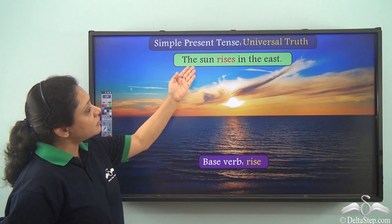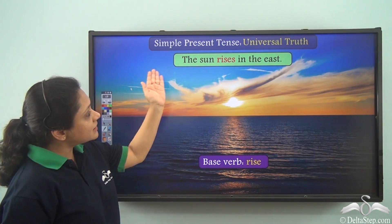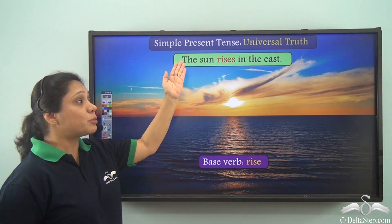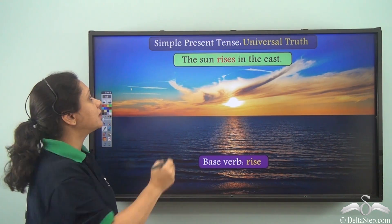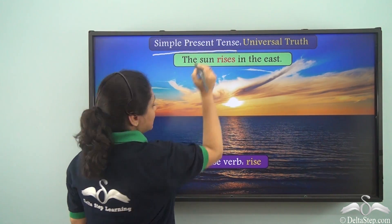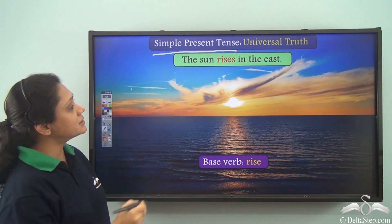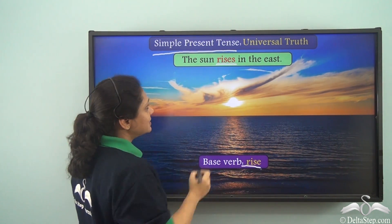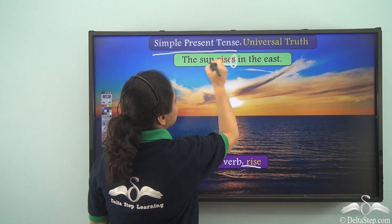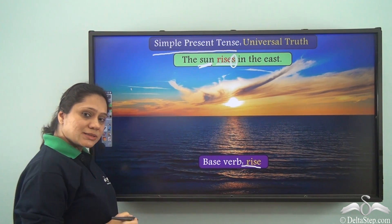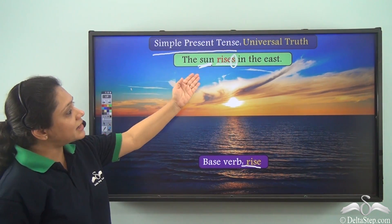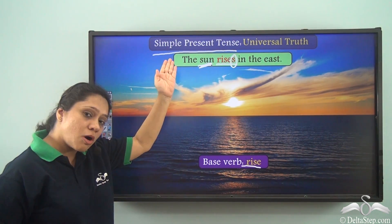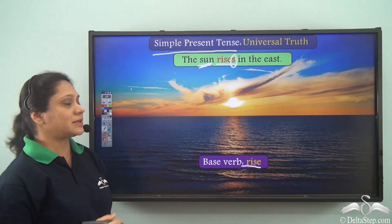The sun rises in the east. This is a universal truth. Sentences which give us universal truth are in the simple present tense. In this sentence, rises is from the base verb rise. We have added an s because we have used it with the singular sun. So the sun rises in the east is a sentence which gives us universal truth and so it is in the simple present tense.